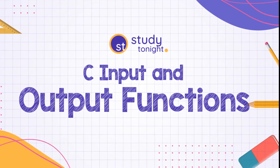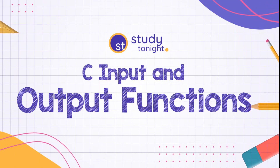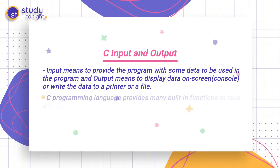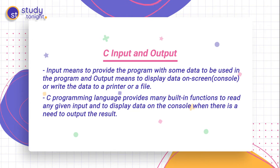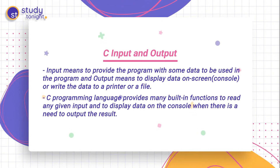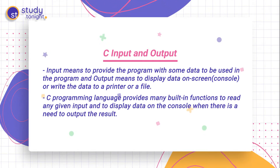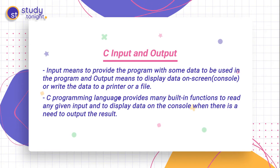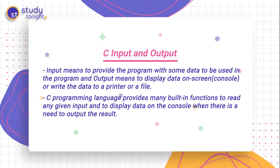Welcome to Study Tonight. In this video we will learn about the input and output functions in C language. Input means to provide the program with some data to be used in the program. Output means to display that data on screen or write the data to a printer or a file. Input is simply whatever we give through a keyboard, and output means to display the result of that program on the screen or write that data to a printer or a file.